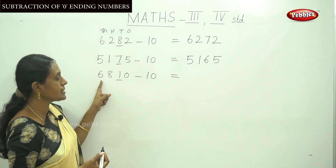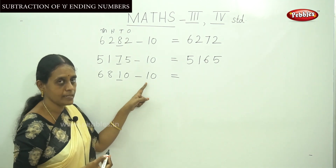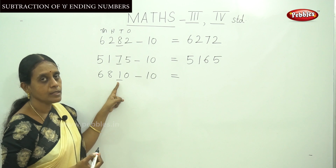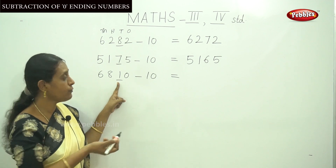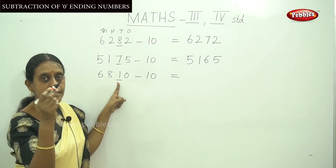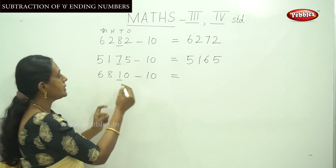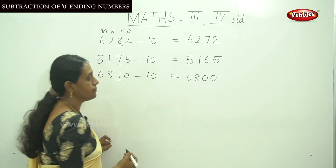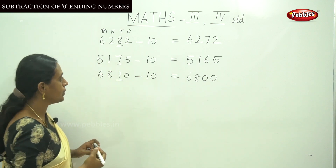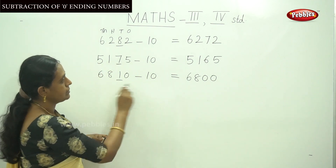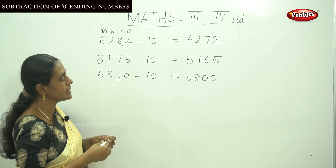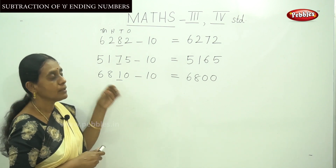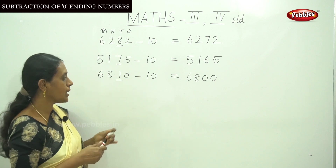And for 6810 minus 10, focus on the tens place number, that is 1. The before number of 1 is 0, so the answer is 6800. This is the easy way of subtraction of 10 without any paper and pencil.